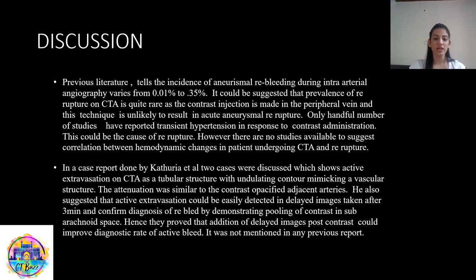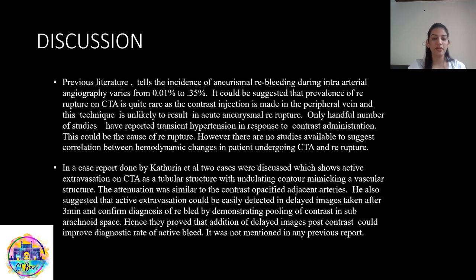In a case report previously done by Kathuria et al., two cases were discussed which showed active extravasation on CT angiography as a tubular structure with undulating contour mimicking a vascular structure. The attenuation was similar to the contrast-opacified adjacent arteries. They also suggested that active extravasation could be easily detected in delayed images taken after 3 minutes, confirming diagnosis of re-bleed by demonstrating pooling of contrast in subarachnoid spaces. They proved that addition of delayed images post-contrast could improve the diagnostic rate of active bleed, which was not mentioned in any previous such reports.